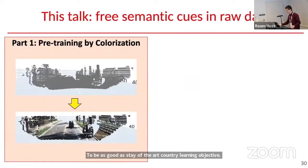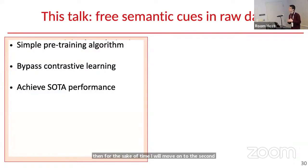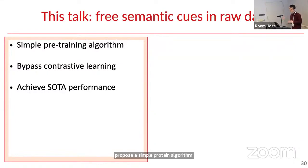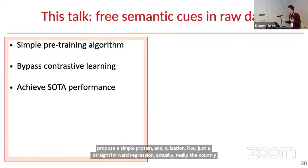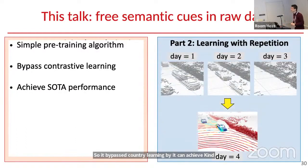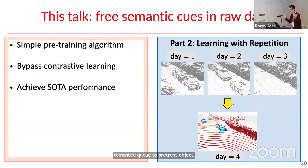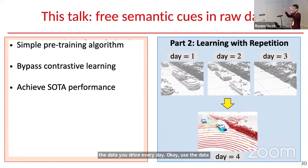That concludes the first part. We proposed a simple pre-training algorithm — colorization as a straightforward regression, bypassing contrastive learning — yet achieving state-of-the-art pre-training performance. For my second part, I'll dive into a different semantic cue: using data from everyday repeated driving. The first part used color as a semantic cue to pre-train object detectors. The second uses data you collect every day — from yesterday, a week ago — to aid prediction for tomorrow, or even to learn an object detector without any labeled data.